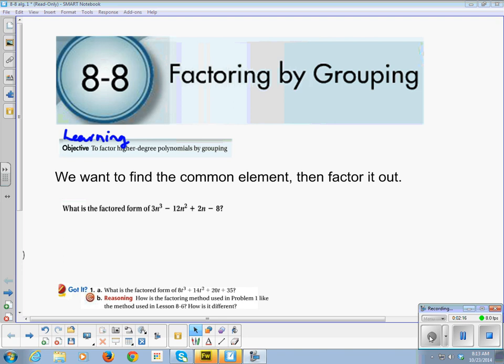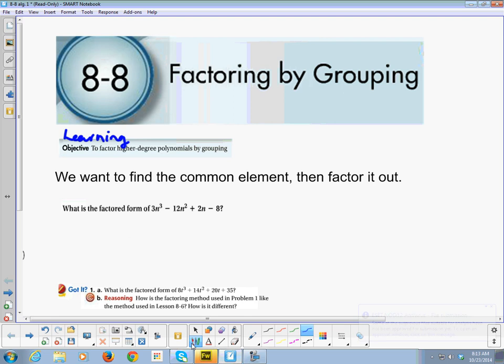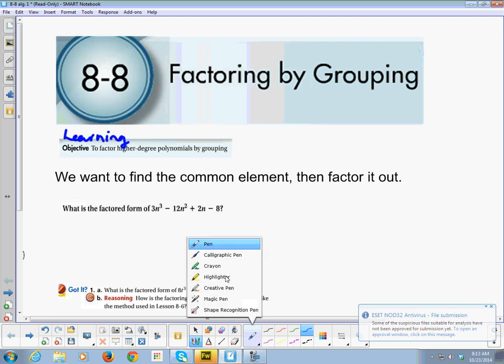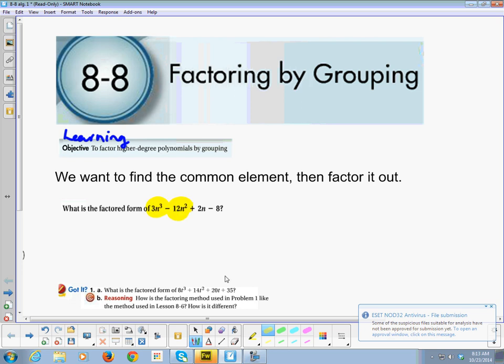So we're going to look at our expression here. And we're looking at each element. I have 3n³, I have 12n², I have 2n and I have -8. In this case, because I know 3 and 12 have a same factor. What goes into 3 that also goes into 12? 3. And I know 2 and 8 don't have that common factor of 3. So here's what we're doing. We're finding the common elements and then factoring them out.